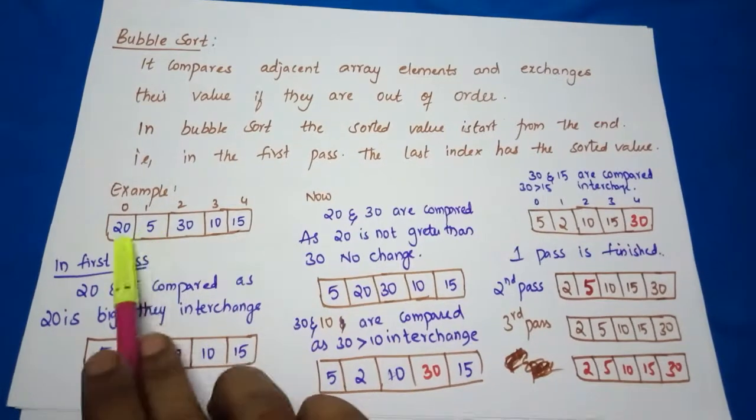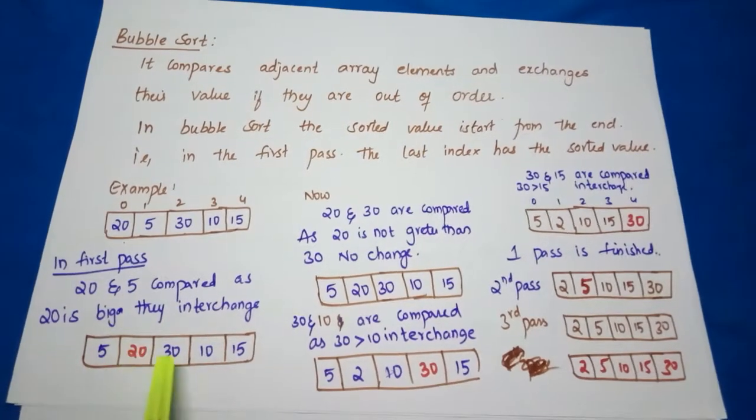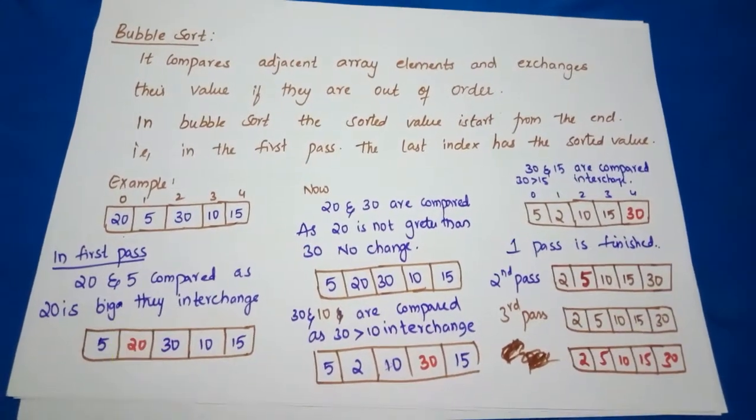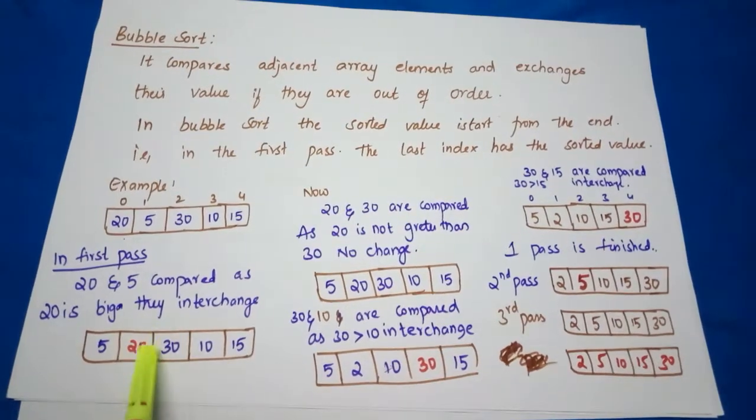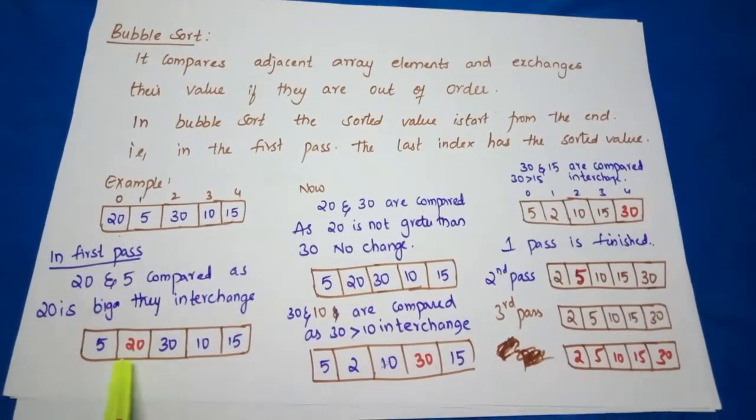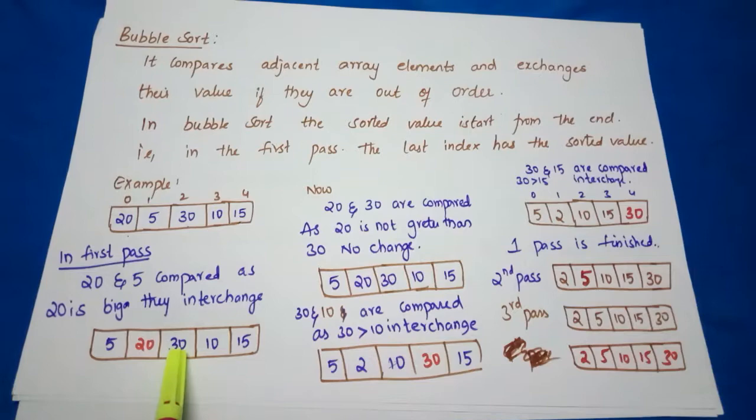We'll check how to do in the first pass. 20 is greater than 5, true or false? Yes, it is true. So we interchange and will get 5, 20, 30, 10, 15. So first is finished.